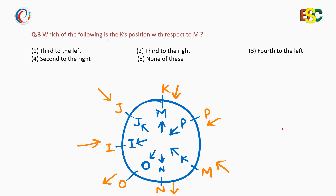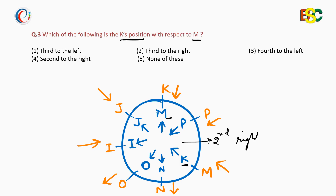The question asks which of the following is the case position with respect to M. We have to find the case position with respect to M. The case drawn inside here shows K is second to the right of M.